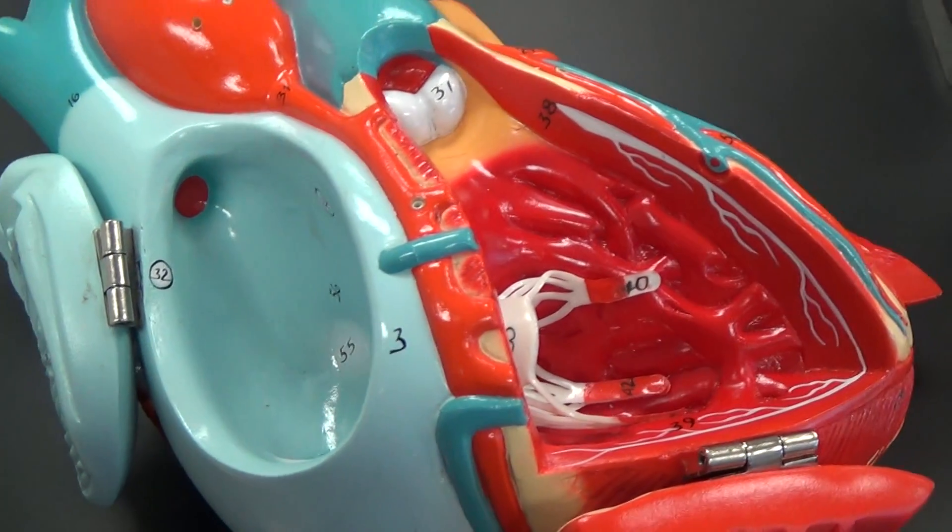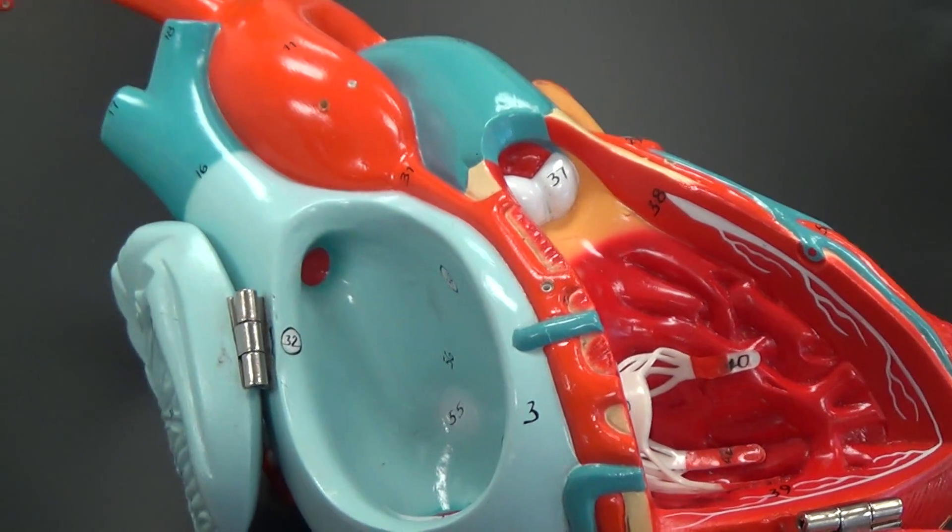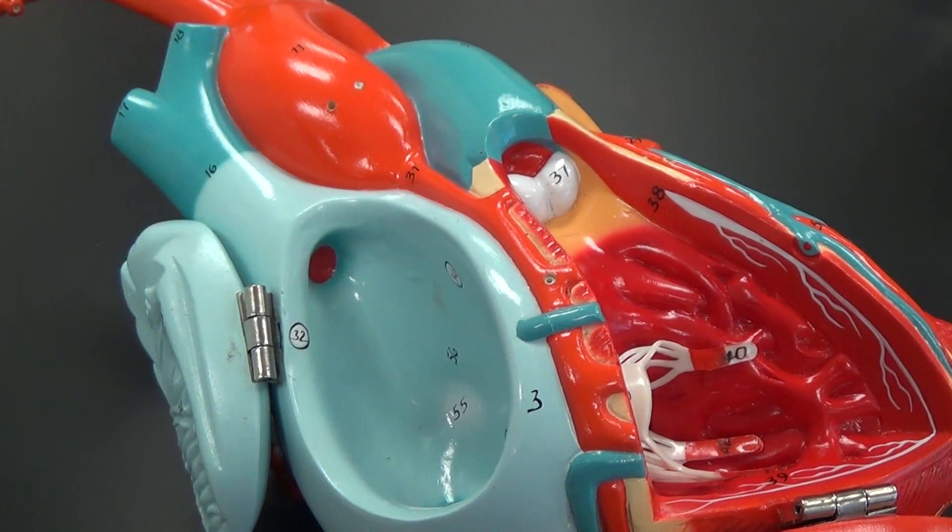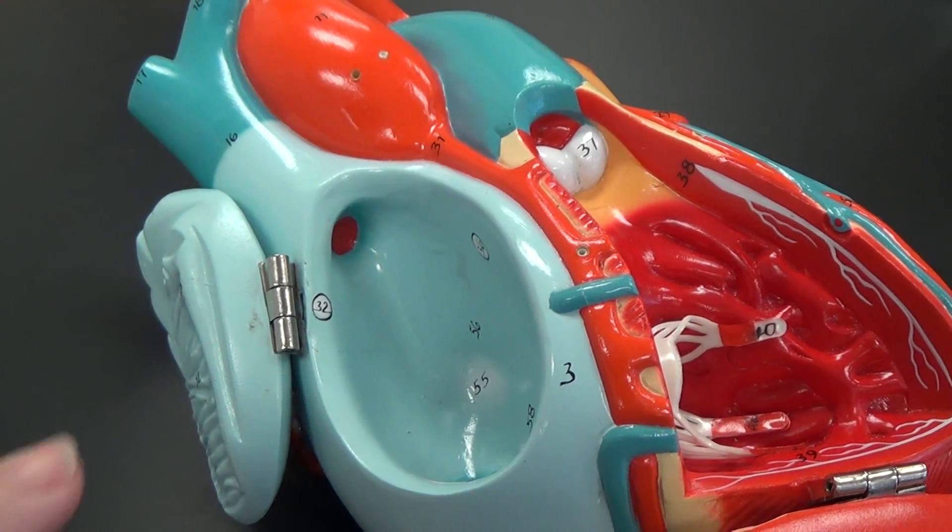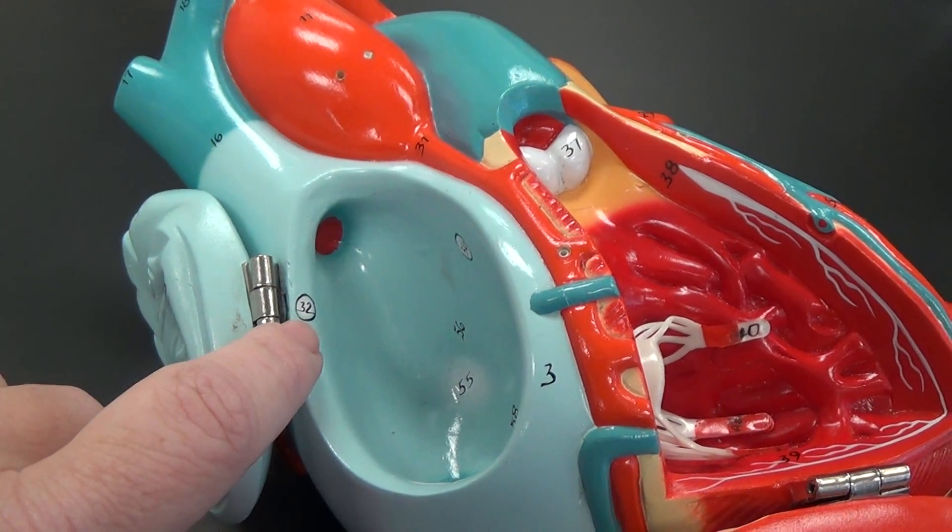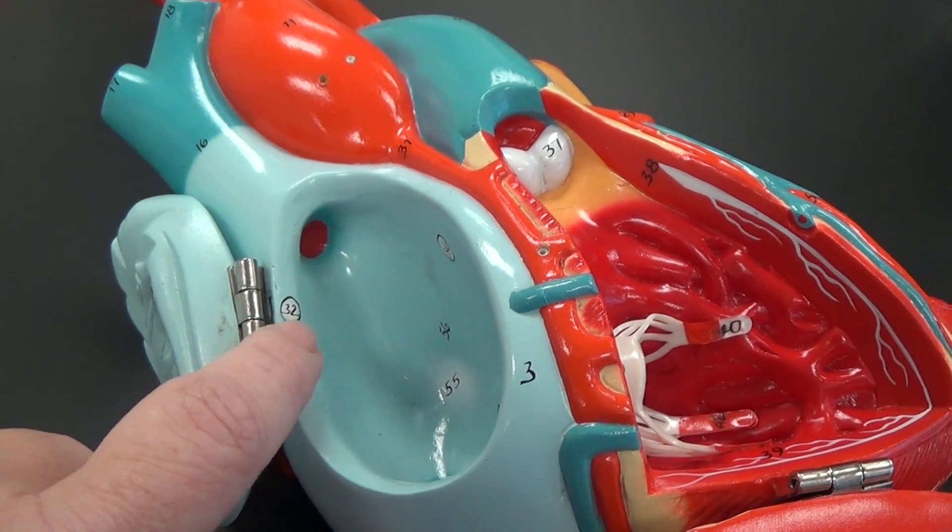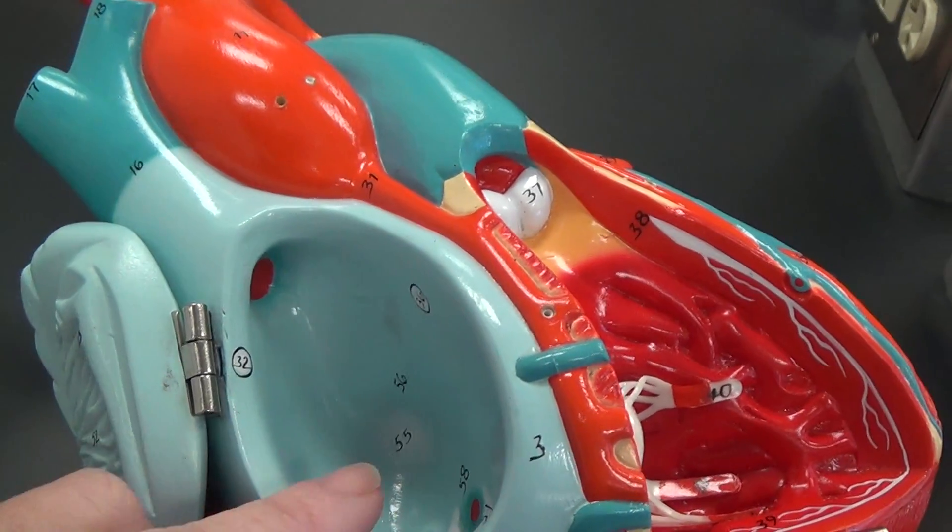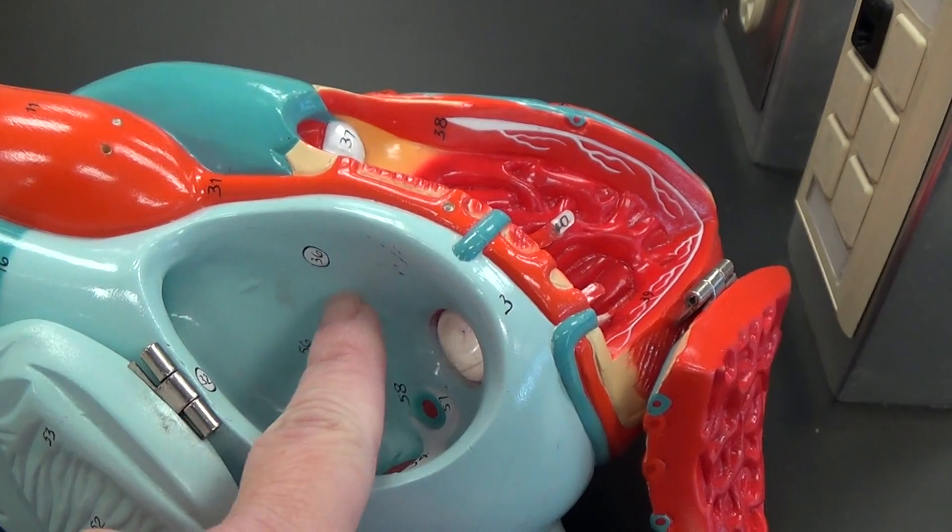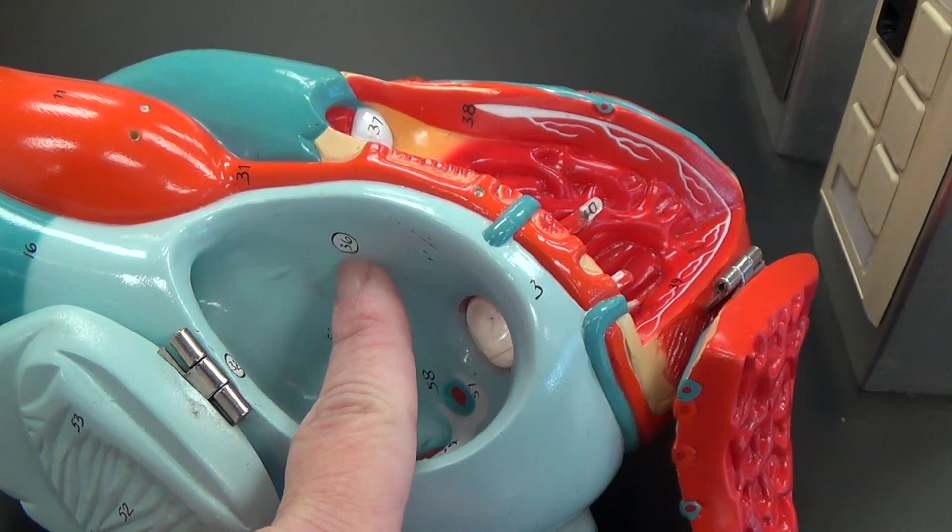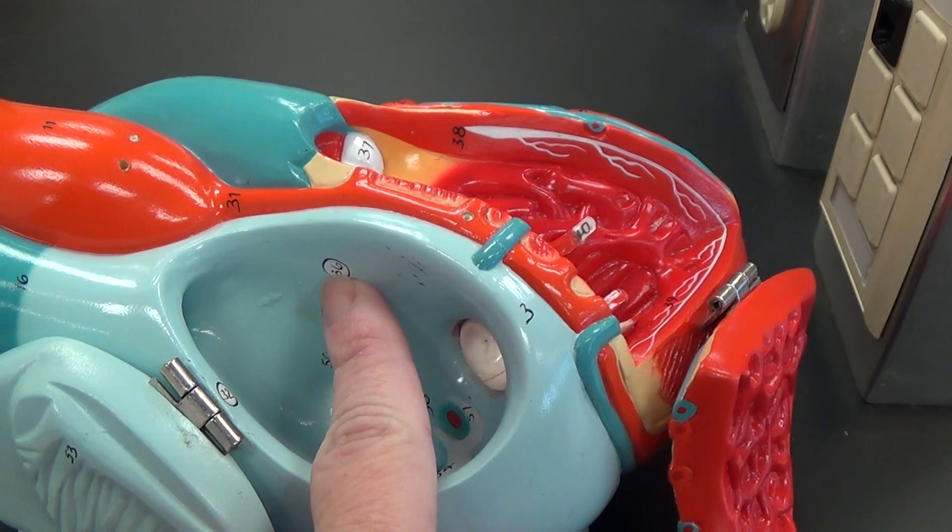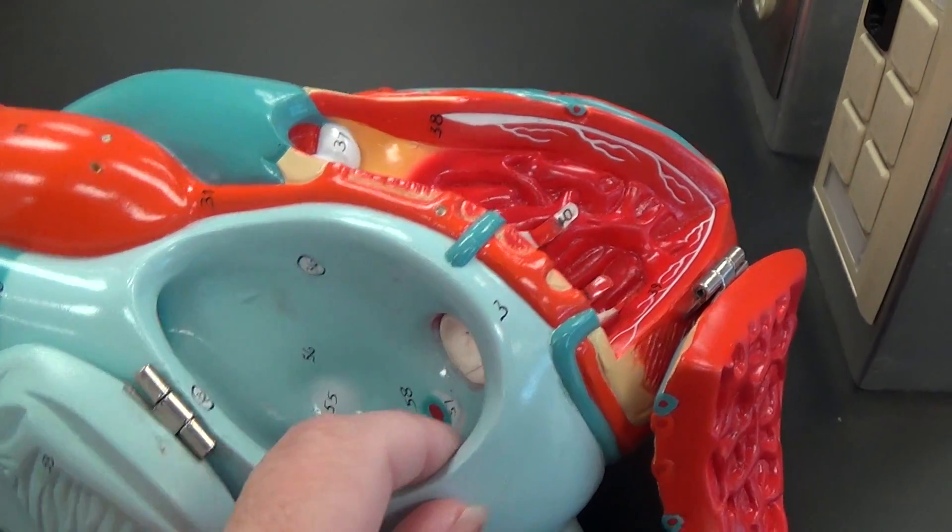The other part we want to look at is the conduction system. This is the system dealing with electrical impulses in the heart. This white circle area here with the black line around it is the SA node, or sinoatrial node. We have another one of these nodes right here, so the white with the black line around it, and that is the AV, or atrioventricular node.